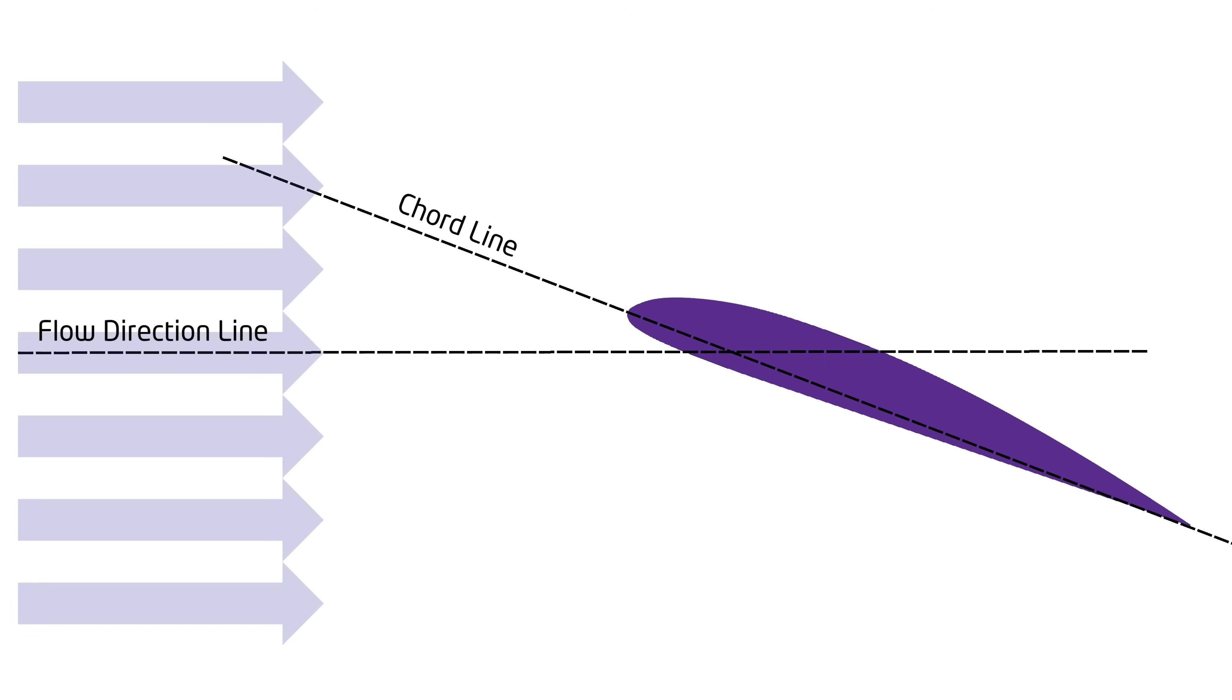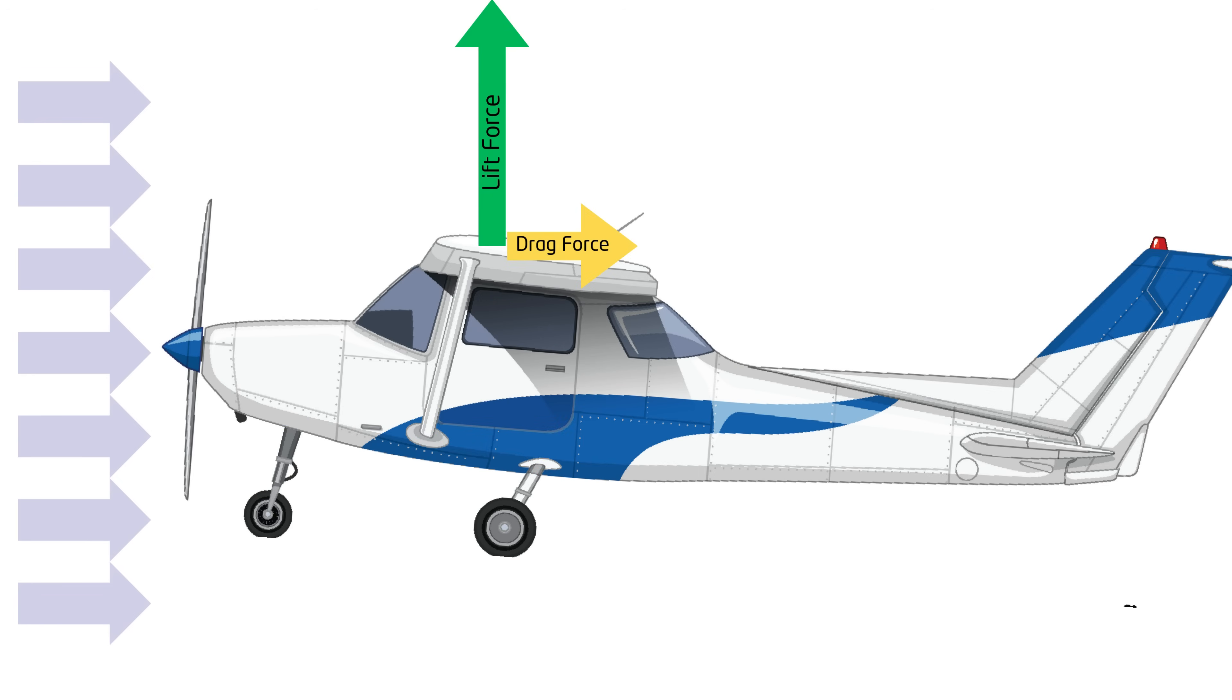Consider an airfoil at an angle to an incoming flow. This angle, measured between the chord line and the flow direction, is called the angle of attack. The flow will generate a pressure distribution around the airfoil, which results in a single net force. It is convenient to break up this net force into two different forces, one which is parallel to the flow direction, which we call drag, and another perpendicular, which we call lift. The lift acts to sustain the aircraft's flight, while the drag represents the resistance to movement through the air.